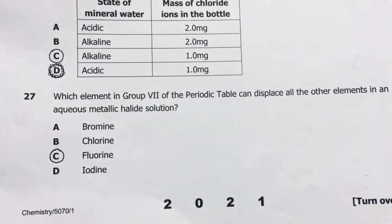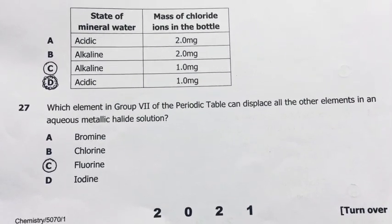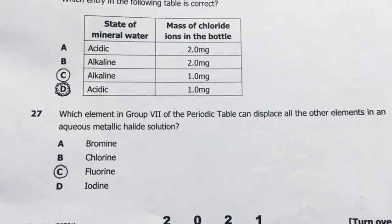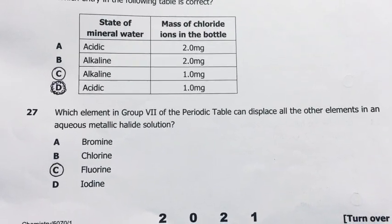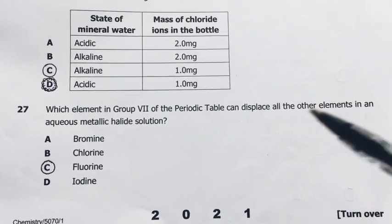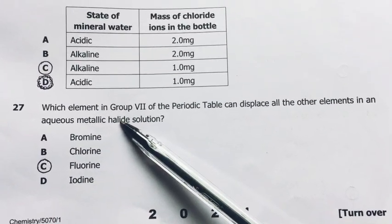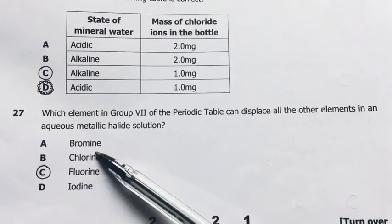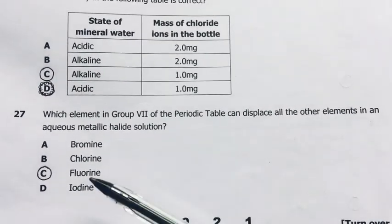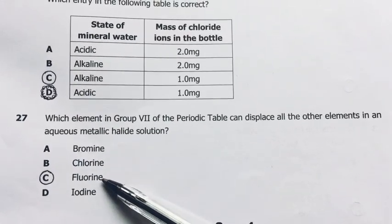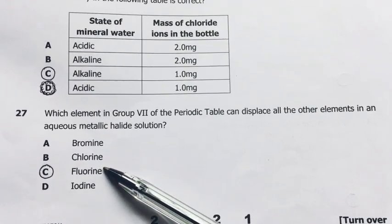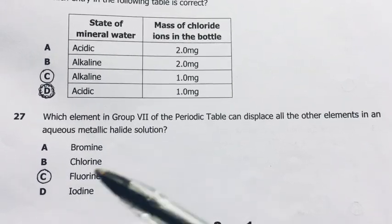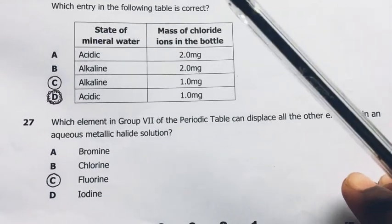Number 27. Which element in group 7 of the periodic table can displace all other elements in aqueous metallic halide solutions? Group 7 elements, halogens, halide solution. All these are group 7 elements and the most reactive is fluorine, meaning it can displace the rest. The most reactive, followed by chlorine, followed by bromine, then iodine. So that's the answer there, C.